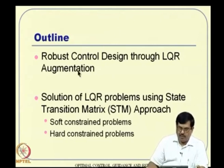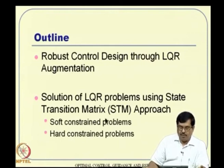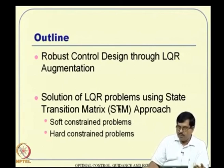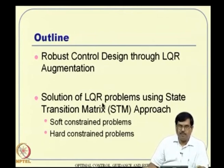The second thing to discuss is the solution of LQR problems using the state transition matrix approach. If you follow the Riccati equation approach, you end up with an n×n nonlinear differential or algebraic equation in terms of the Riccati matrix, and the solution becomes involved - often requiring numerical computation. With the state transition matrix approach, the drawback is that problem dimensionality increases from n to 2n, since we consider x-dot and λ-dot together. But you increase the dimensionality while reducing the complexity.